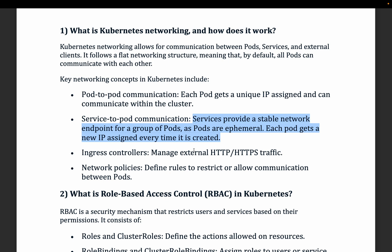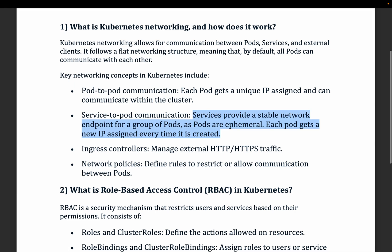Third, ingress controllers manage external HTTP or HTTPS traffic — with an ingress controller you can route traffic to different services and ultimately to the pod. Fourth, network policies define how network traffic is communicated across different namespaces. For example, within one cluster you may have namespaces A, B, and C, and you can restrict communication from A to C using a network policy.